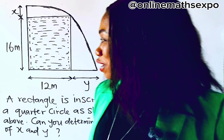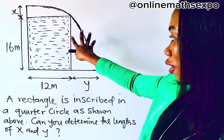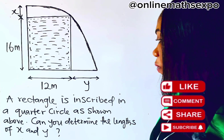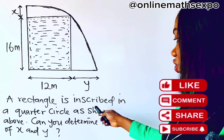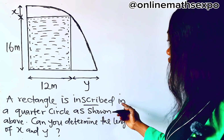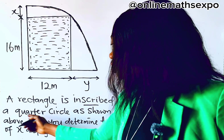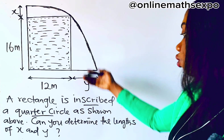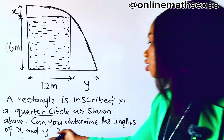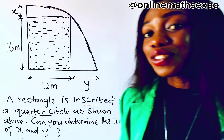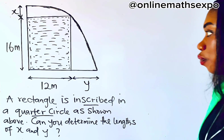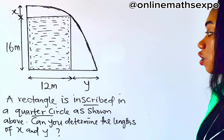Hello lovely one, let me teach you how to solve this tricky question on geometry. We are told a rectangle is inscribed in a quarter circle as shown above, and we are asked to determine the lengths of x and y. It's just so easy — let me teach you what you should know.